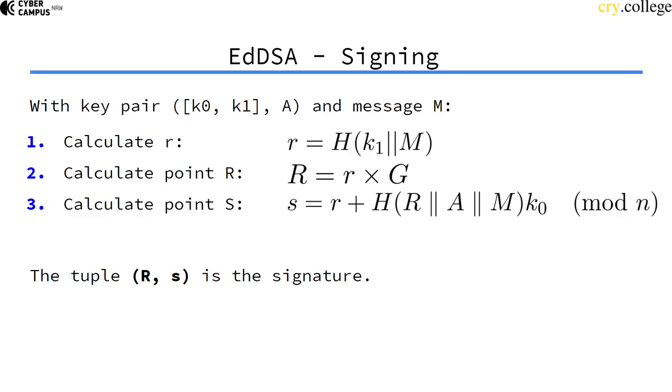So now if we want to sign the message M, we first calculate an R value again by hashing K1, which is part of the private key, concatenated with M, the message. Then we calculate a point by scalar multiplication of R times G, and then we calculate a value. Sorry, this is not a point, this is a scalar,